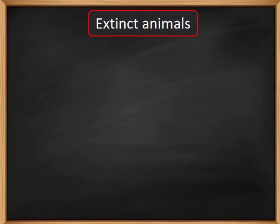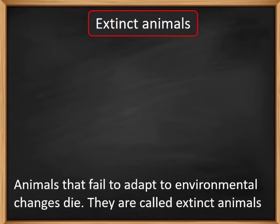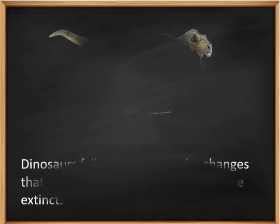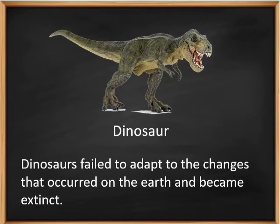Extinct animals. Animals that are unable to adapt themselves according to environmental changes die and disappear from the earth forever. Such animals are called extinct animals. Archaeopteryx and dodo are extinct animals because they failed to adapt to the changing environment. Another example of an extinct animal is the dinosaur. They were very large animals that lived on earth millions of years ago, but they failed to adapt to the changes that occurred on the earth and became extinct.